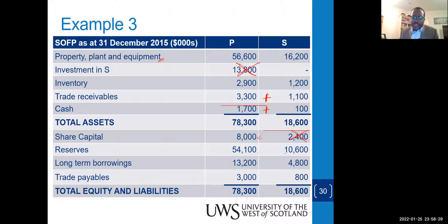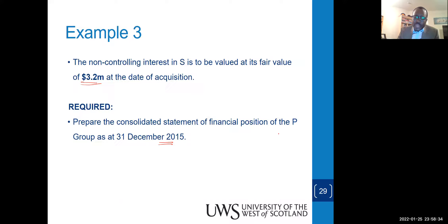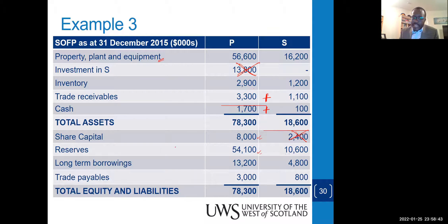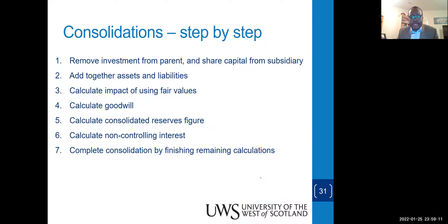For share capital, the parent's is kept and the subsidiary's is knocked off against the investment. For reserves: at acquisition, the subsidiary had reserves of 9,100; at the reporting date they have 10,600. The post-acquisition increase is 1,500. For borrowings and payables, simply add them up. Then remove the parent-subsidiary relationship — knock off the investment against the subsidiary's share capital — and look at the fair value adjustments.